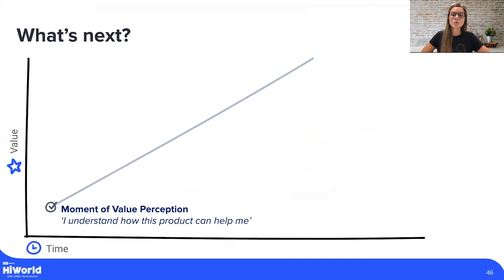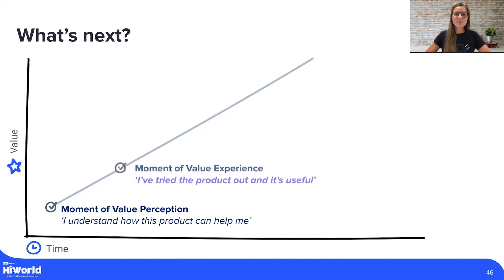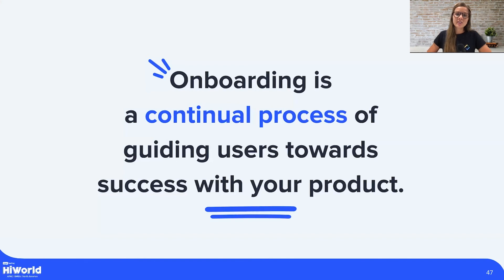So we went through a few ways that remove friction and help users try the product and see its value. Here's a quick recap. Step one: users understand how this product can help them — that's your Google ads, Facebook ads, and of course your website. Step two: try the product and see its value — it's all about creating that momentum that leads users to the aha moment. Step three, our next focus: assist users in adapting the product into their everyday workflow so they can invite and start collaborating with their team. Onboarding is a continual process of guiding users to success with your product.